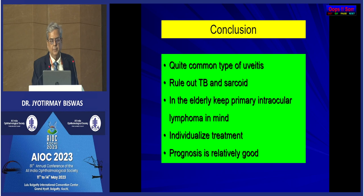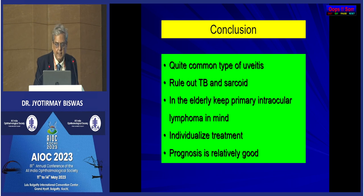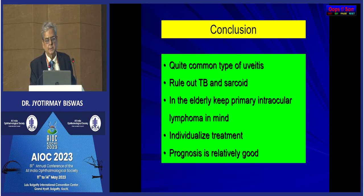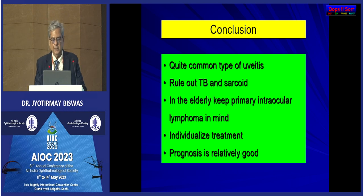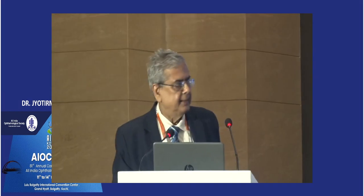In conclusion, intermediate uveitis is quite common — one in five uveitis cases. Rule out TB and sarcoid in our country. In the elderly, keep primary intraocular lymphoma in mind. Individualized treatment is very important, and prognosis is relatively good though it has a protracted course.